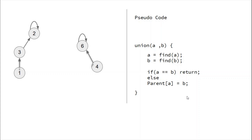We've seen the implementation of the find function using both recursive and iterative methods, and how to merge two sets using the union operation. Disjoint sets are implemented using a simple array, so their implementation is very easy to understand. I hope you enjoyed this video — please like, comment, and share, as that is my motivation to work harder. Thank you.